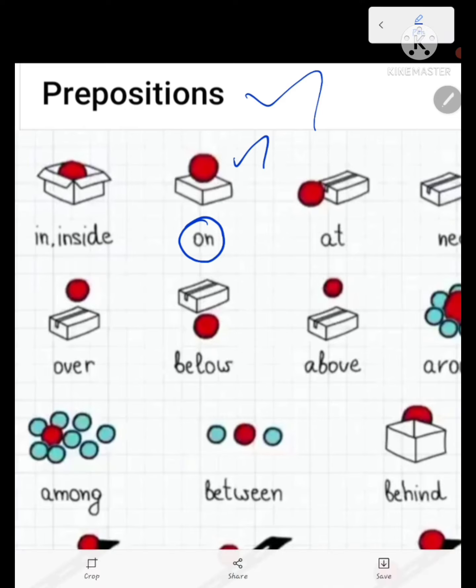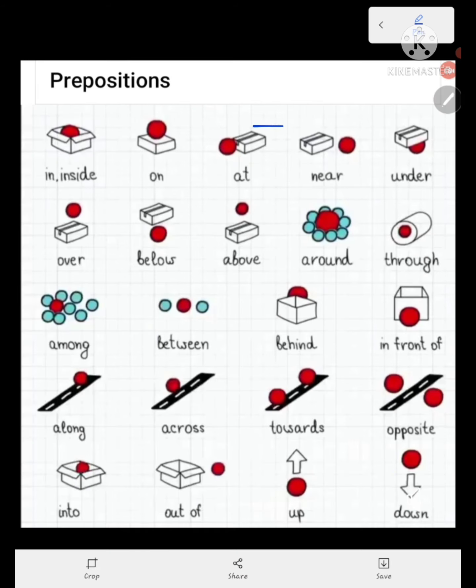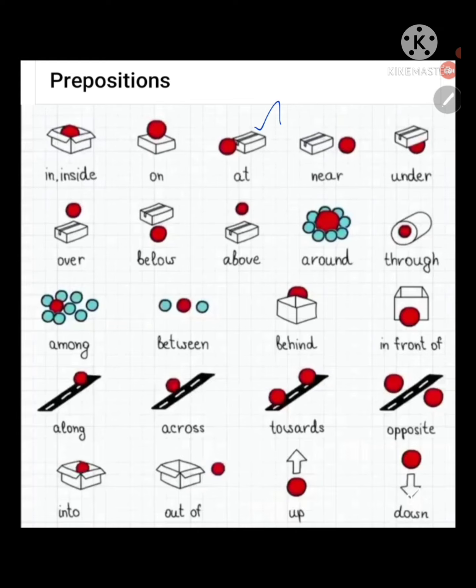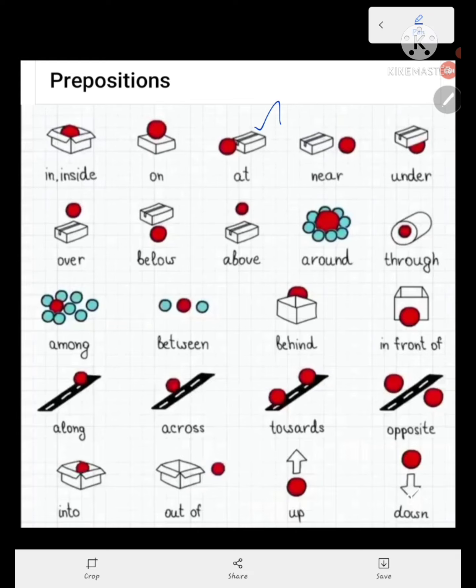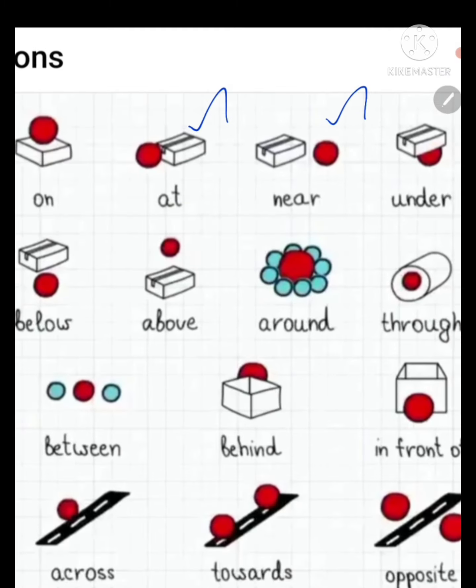Mele, yes exactly. So mele box ikku mele irikki radhi. Now come to the preposition at. What is the meaning of the at? Edathil, yes. Ithikku pakkathila irikki redathila irikki. Box ikku pakkathila ball irikki, so near, near on the same thing. Near is also the ball is near the box like that.